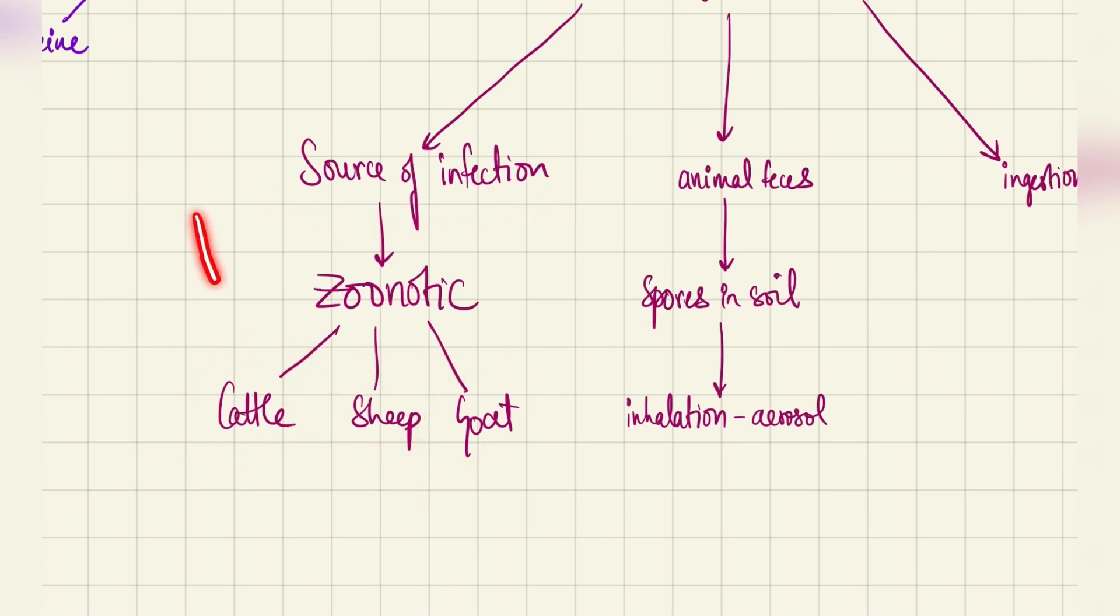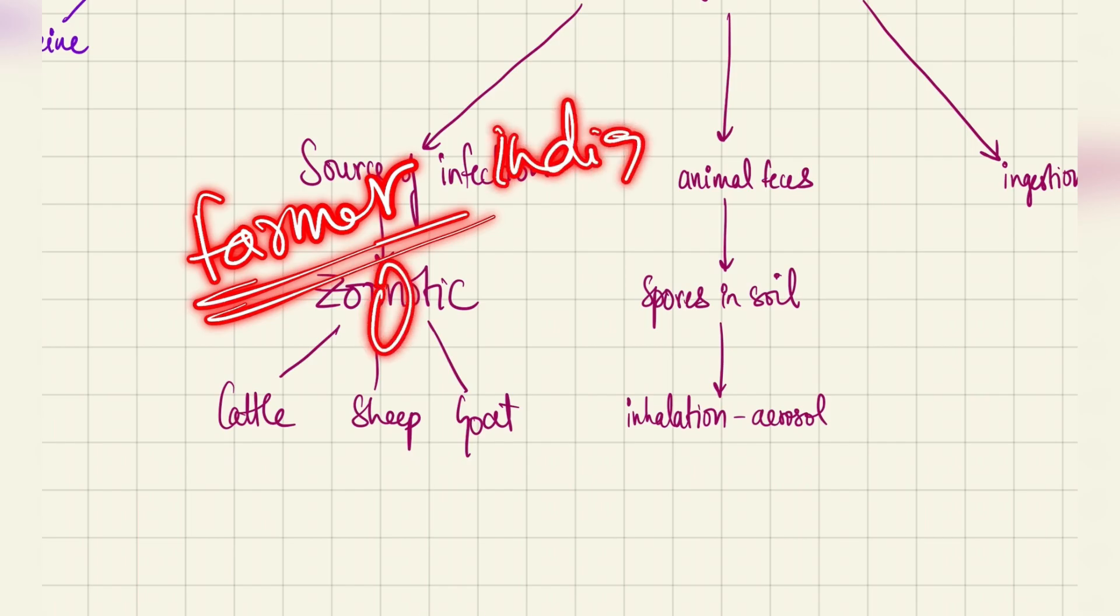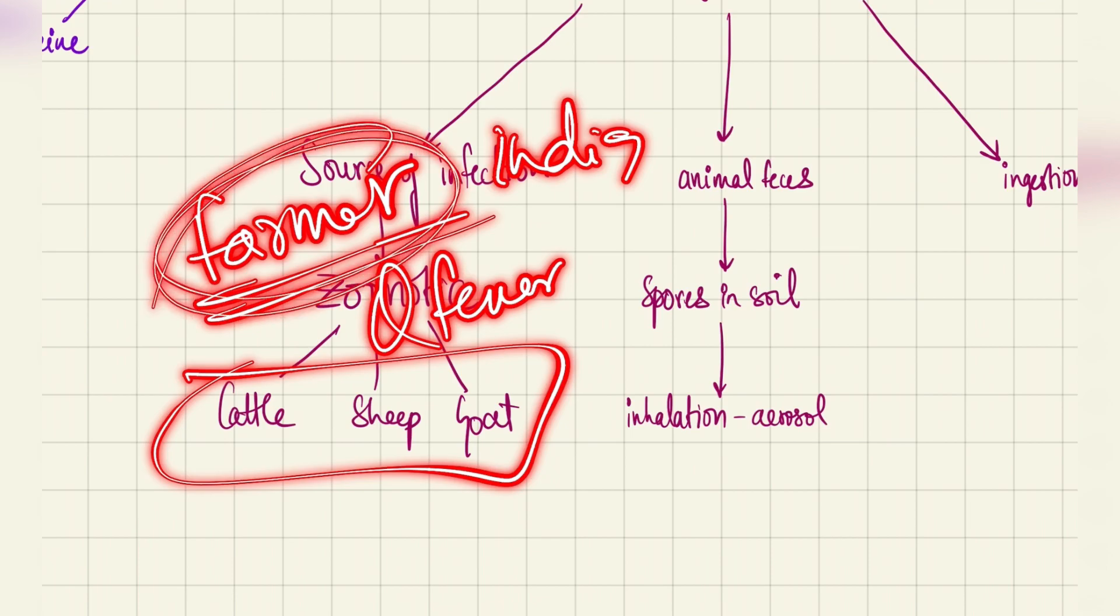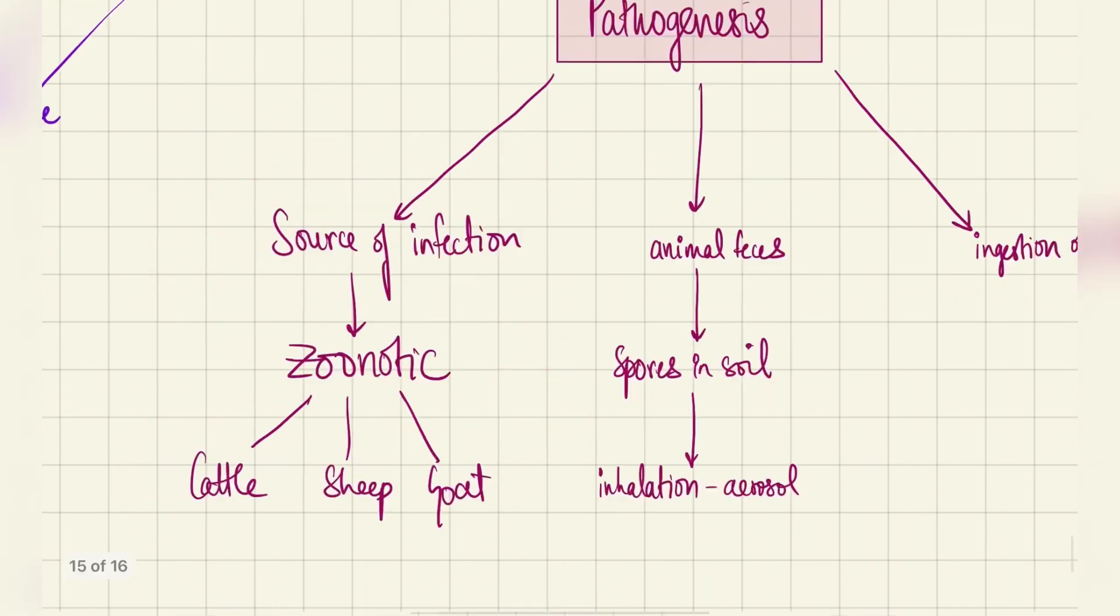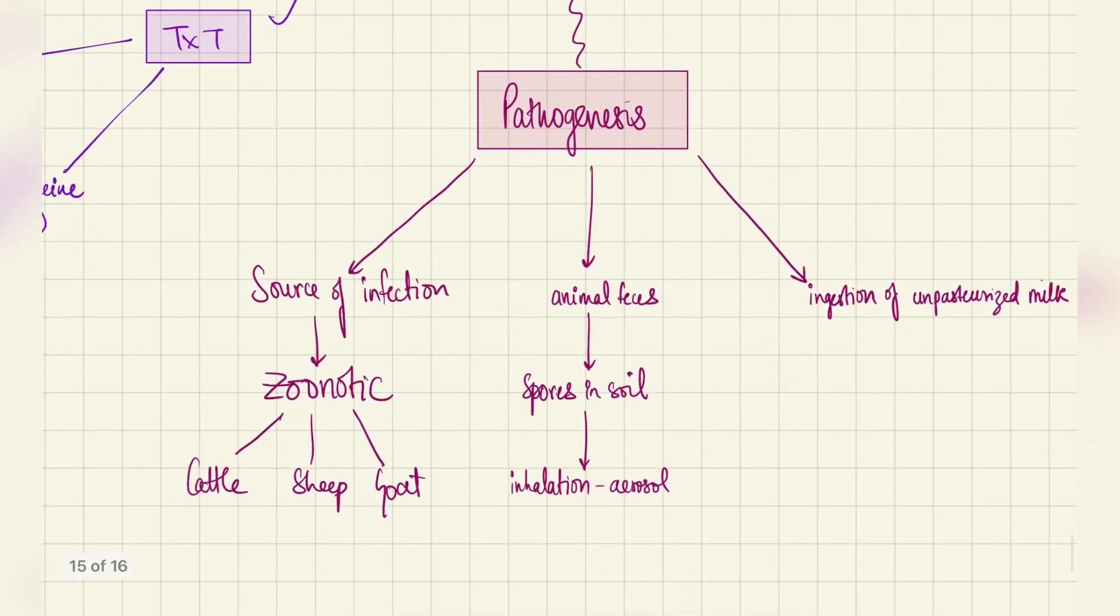They will give you a classic vignette of a farmer in India and he gets a fever and it's basically Q fever. If it's a farmer, you think Q fever. Directly a farmer, you start to think Q fever. Cattle, sheep, and goat are the sources of infection.